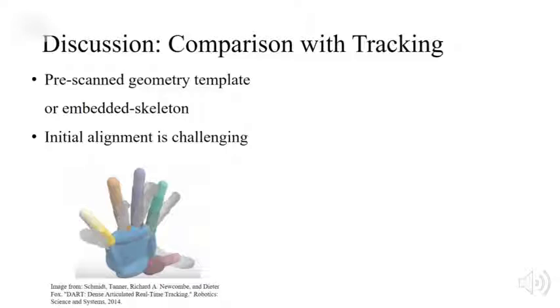We briefly compare dynamic reconstruction with tracking approaches. Tracking uses pre-scanned templates or embedded skeletons. However, a good initial alignment between the template and the observation is required. This alignment is usually problem-specific and not easy to obtain.